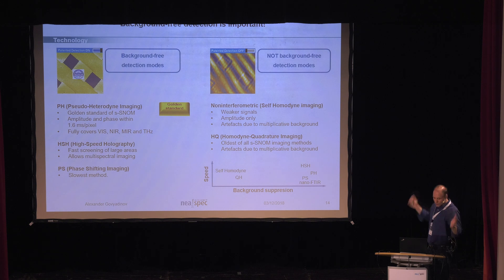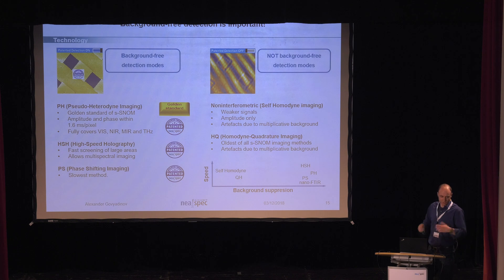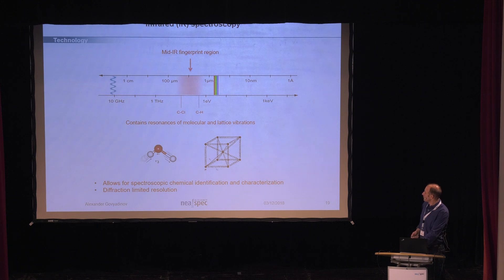So, this is kind of a short summary of some detection modes. These are detection modes which provide the multiplicative background suppression. Some of you might have heard of pseudoheterodyne. It's probably the golden standard of SNOM nowadays. Then there is also two more methods: high-speed holography and phase shifting. The good thing for us, at least, that all three of them are patented and there's proprietary modes for Neospec technology. And this is just a reminder what happens if you don't suppress the multiplicative background and you don't use the proper detection modes.